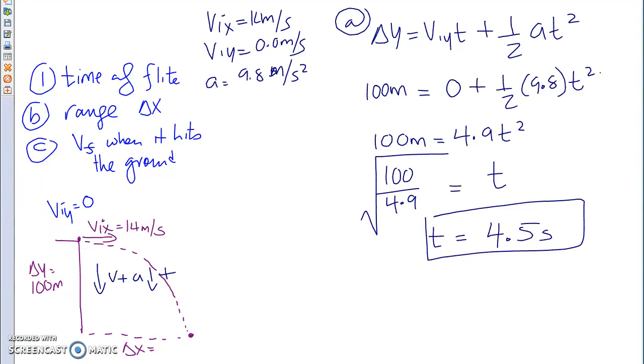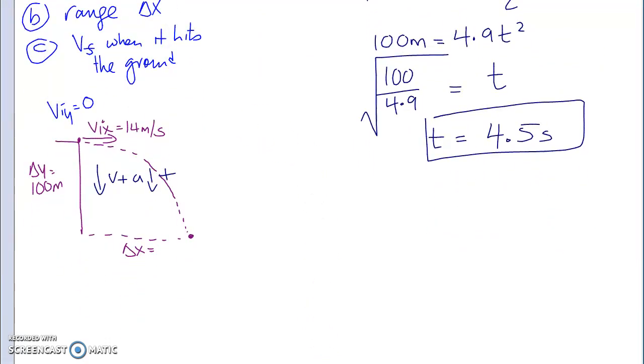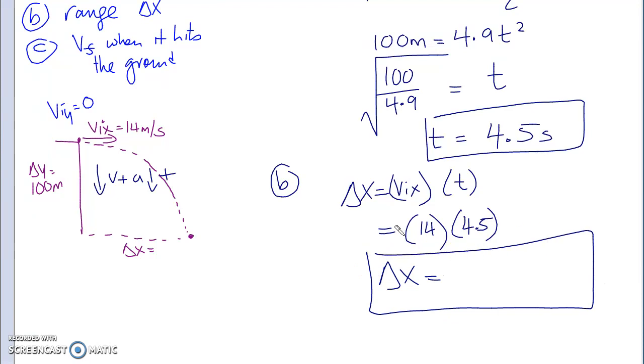Part B of the question. Part B of the question says, what is my range? How far away will I land? Where will this ball land in the valley below? So delta x equals Vix times t. I was given my Vix, 14 meters per second, times 4.5 seconds. What is your delta x? 63 meters. Part B of the question, 63 meters.